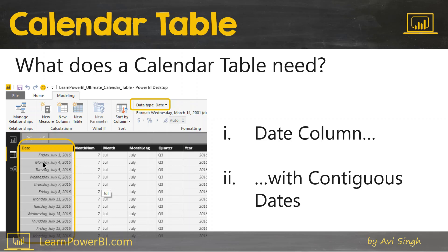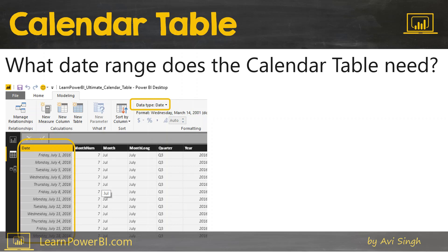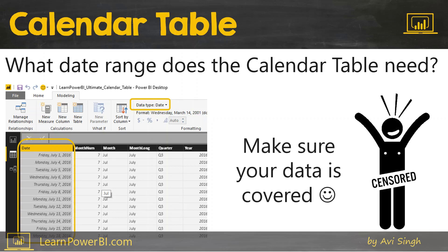So really the date column is all you need in the calendar table as far as Power BI is concerned. All of the other columns are needed for us humans, and I'll talk more about that later. As for the date range, it should fully cover the data in your tables. So if you have sales records from 2014 to 2017, your calendar table should at least cover that range — it can be bigger, and that's okay too.